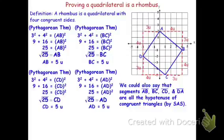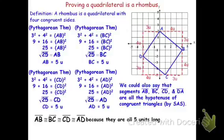Well, congruent triangles have congruent parts, which means AB is congruent to BC, is congruent to CD, is congruent to AD, because they're all 5 units long.